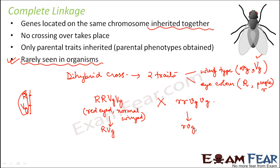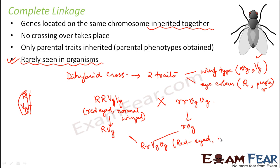In the F1 generation we get the heterozygous Rr VgVg — this is red-eyed and normal wing, but this is a heterozygous organism. Now if we perform a test cross...